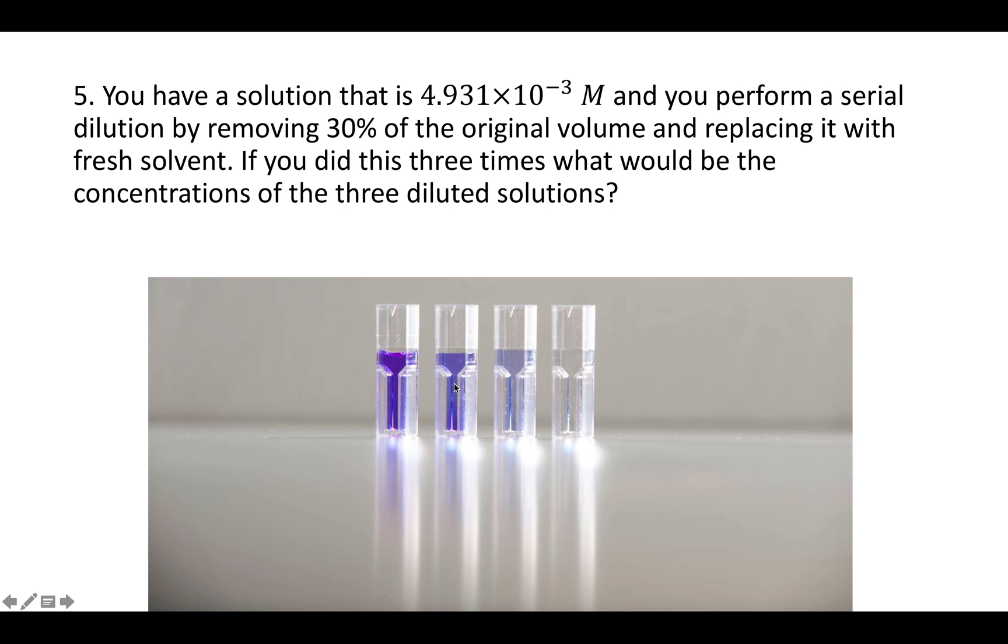If you do the dilution again, take 30% out and fill the rest up with water, it's going to be 70% of that second dilution. So you take that and multiply it by 0.7 again. And likewise, if you diluted it again, take that concentration and multiply it by 0.7.